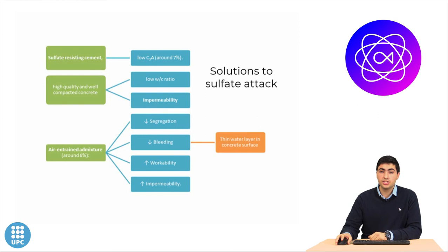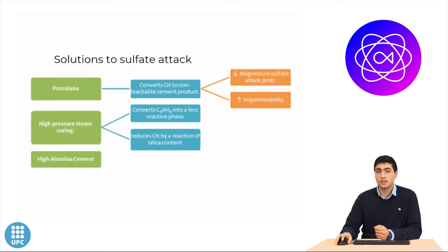Nonetheless, solutions to tackle these effects have been used. For instance, sulfate-resistant cement with low C3A, to avoid DEF, high-quality and well-compacted concrete, with a low water-to-cement ratio, air-entrained mixtures, high-pressure steam curing and high-aluminous cement, as well as pozzolans and silica fume, to work efficiently in terms of sulfate attack.